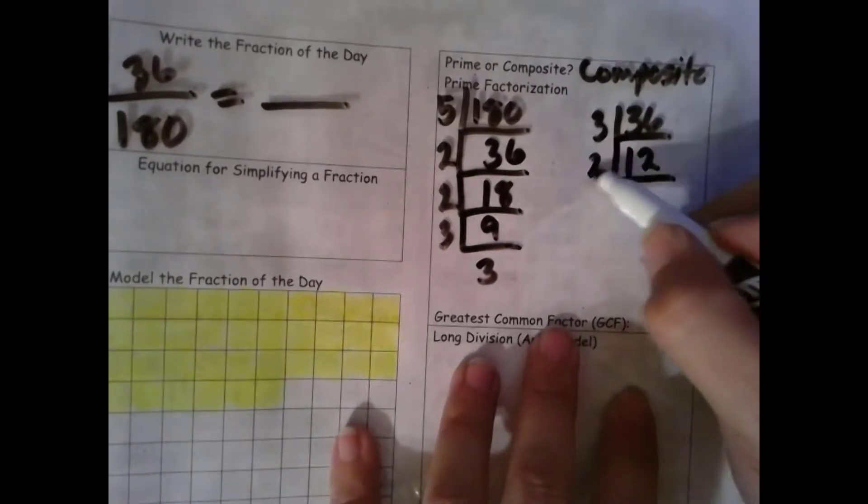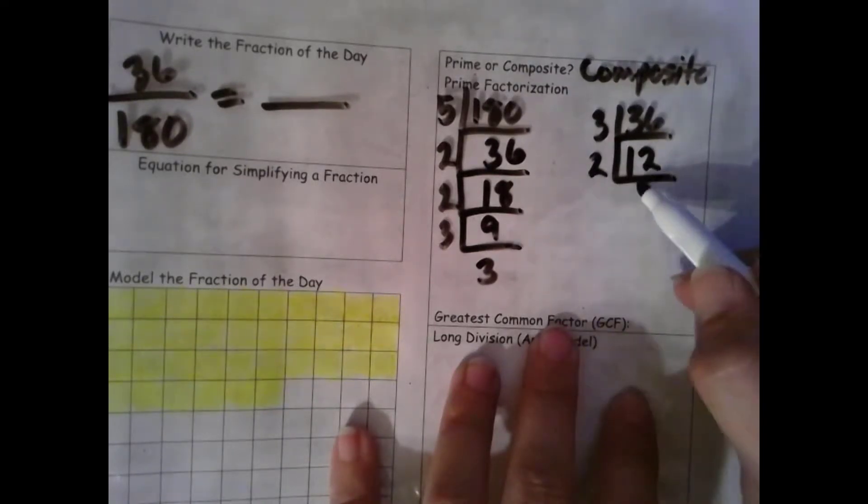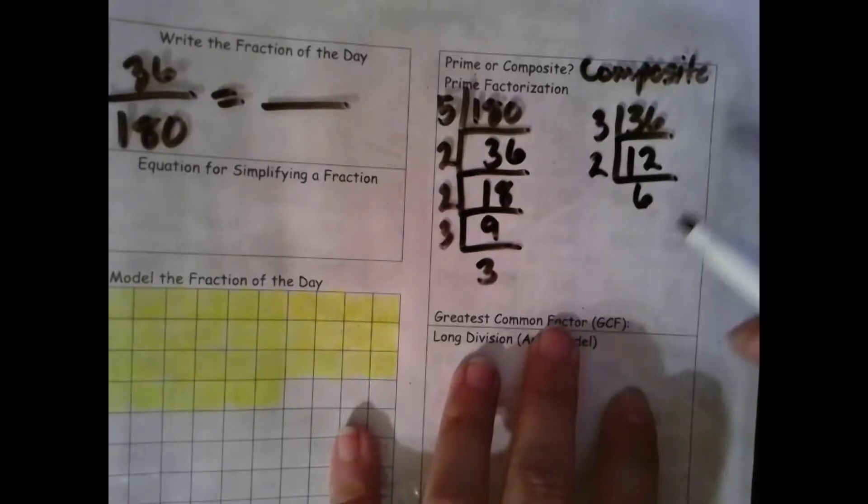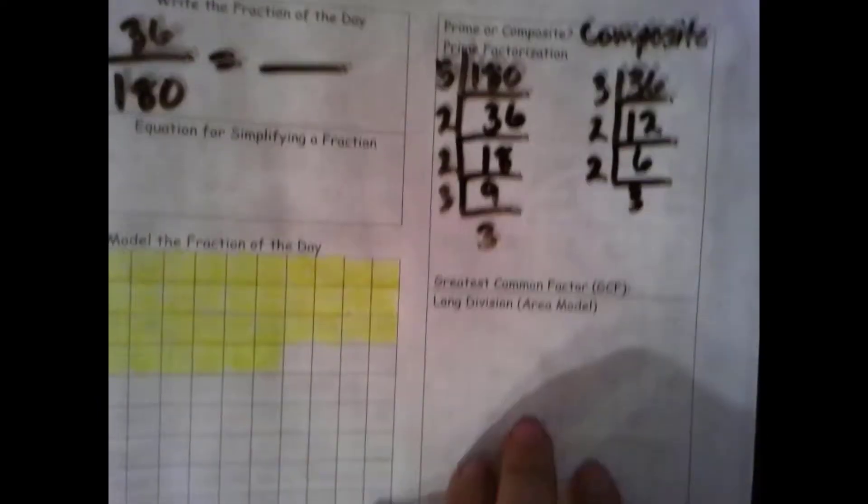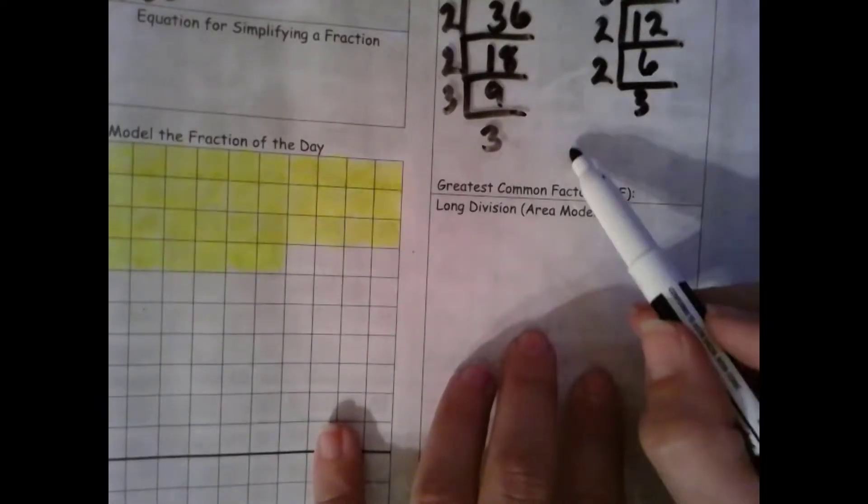12 is even, so I can divide by 2. I get 6. 6 is even. I can divide by 2. I get 3. So I get to a prime number.